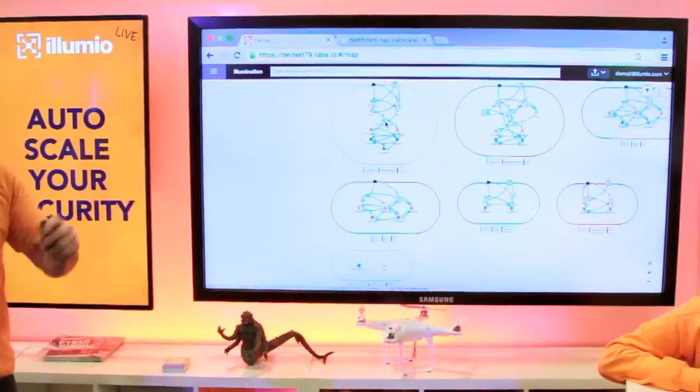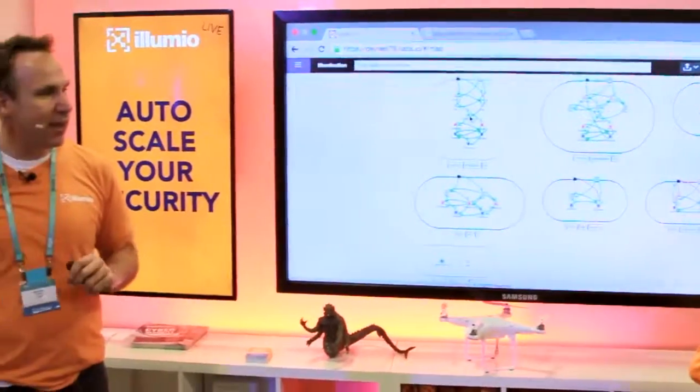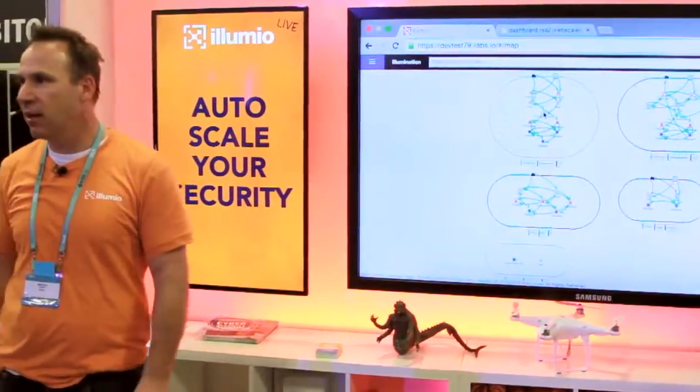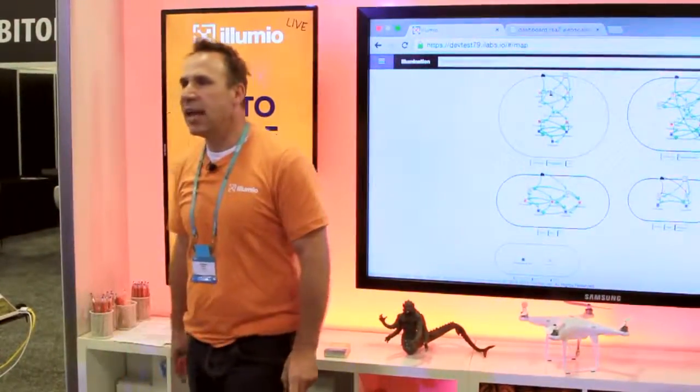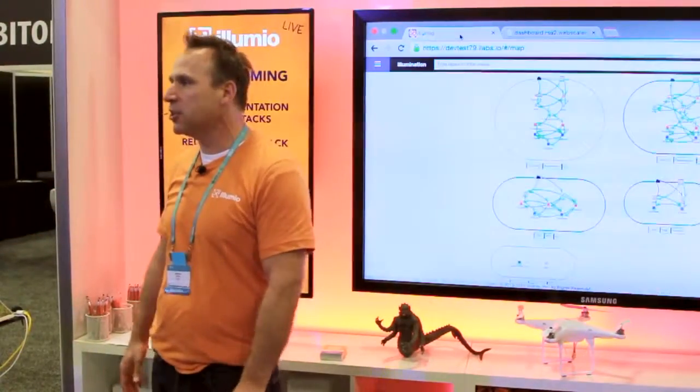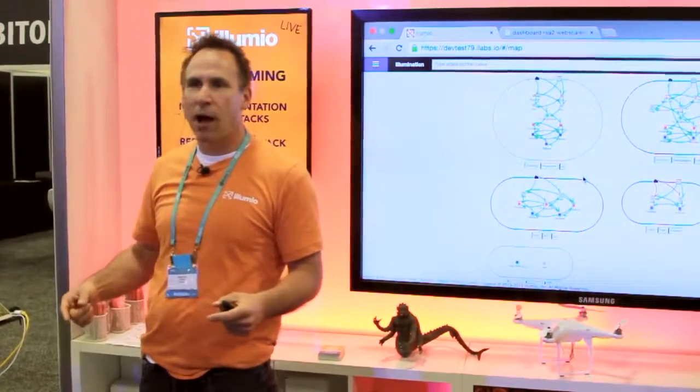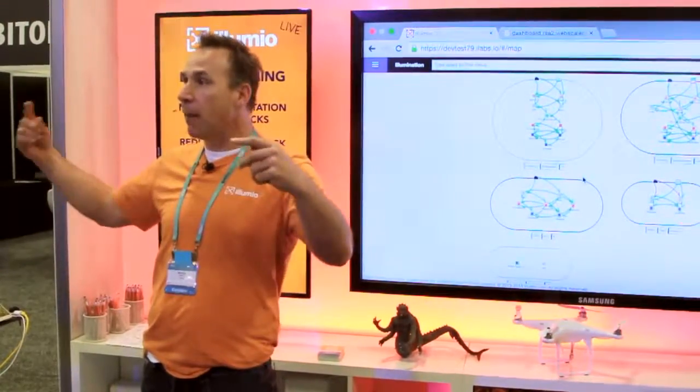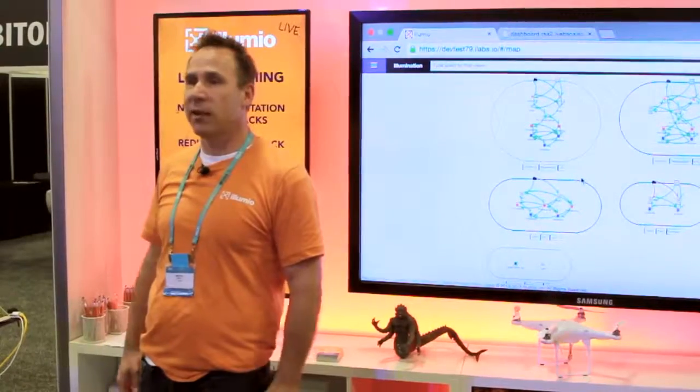So Anoop, do me a favor. Spin up 10 web instances in Amazon. So what's going to happen now is Amazon is going to go spin up 10 new web servers of the applications here. And while Amazon's doing its stuff in the background, we're going to compute the optimal security. And while it's doing that, I am going to talk to you about compliance.